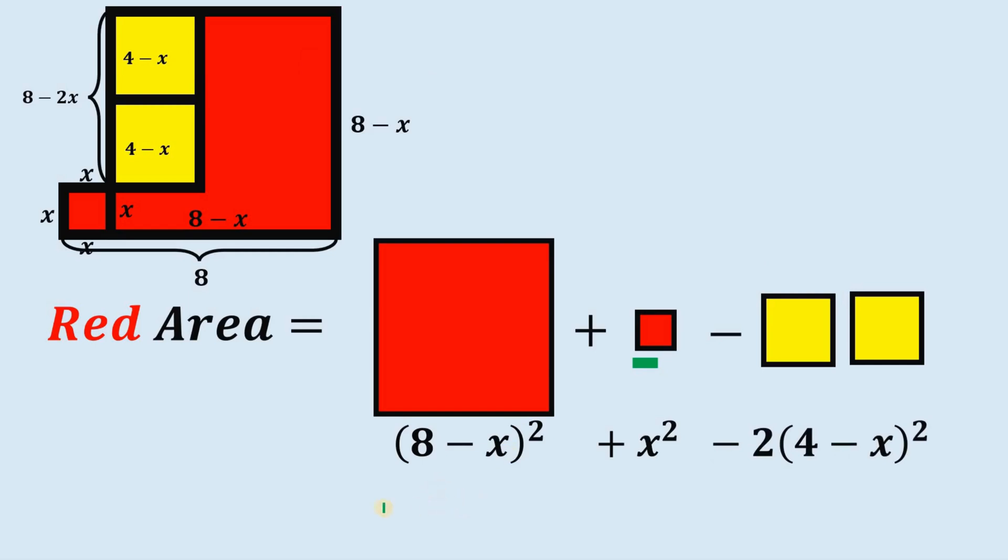Now simplify these expressions, we have 64 minus 16x plus x squared. Now bring down x squared, and then 4 minus x raised to the power of 2 times 2, this is just negative 32 plus 16x minus 2x squared.